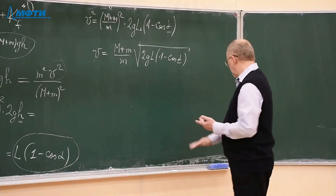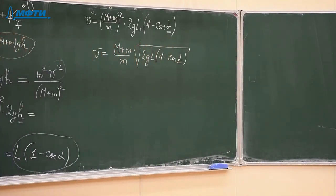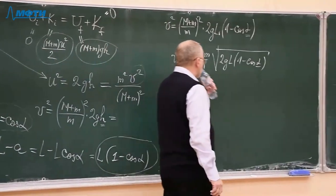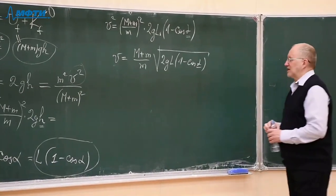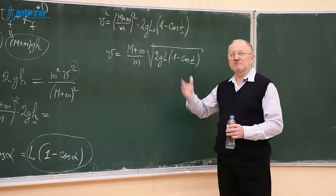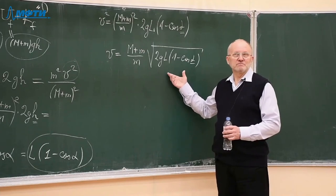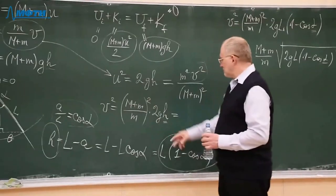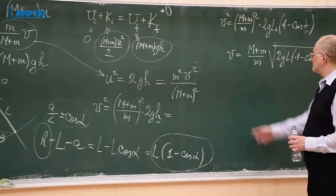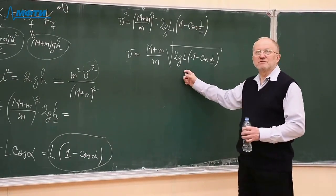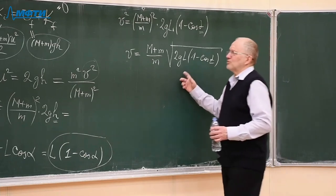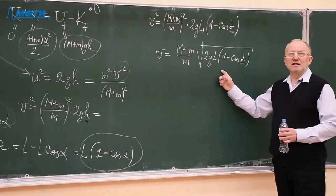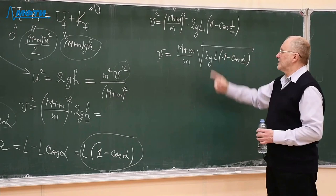Now we have come to an important stage in the solution of any problem that I have not yet discussed before. Whether this solution is correct or not — how can we prove that the formula is correct? Sometimes people make algebraic mistakes. There is a simple way: we can analyze the correctness of the formula by looking at it and thinking about how the quantities influence the velocity.